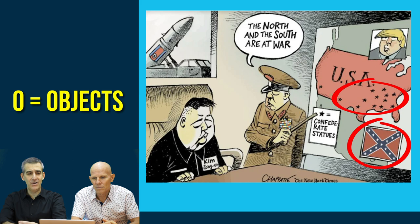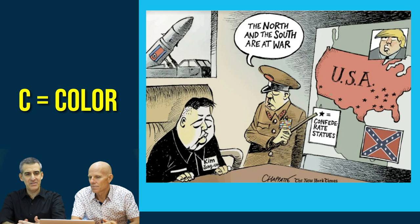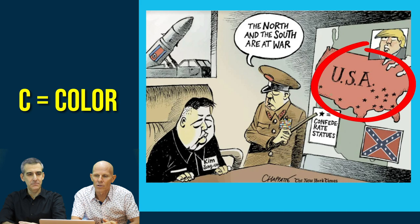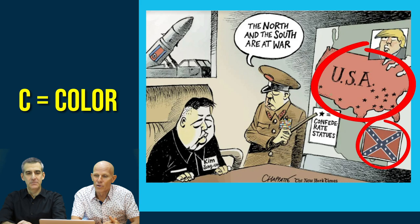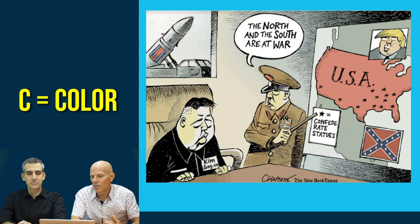Next, we have color. The color red is very striking on the map — we think about red being significant in the US when talking about red states and blue states. The red of that Confederate flag draws our eyes with its graphic weight and is quite significant. That's contrasted with the black clothing Kim Jong-un is wearing, and those colors are significant as well.